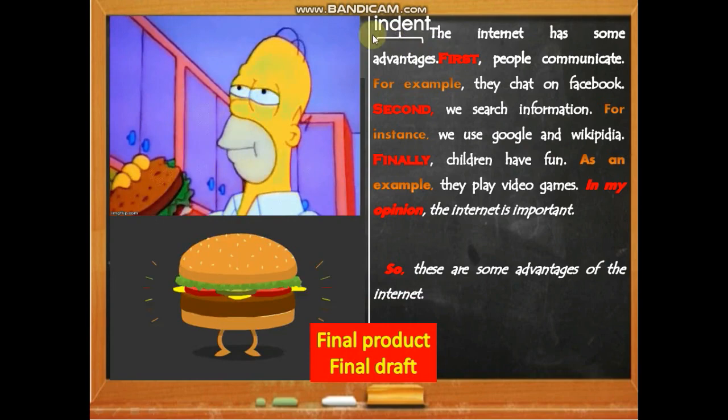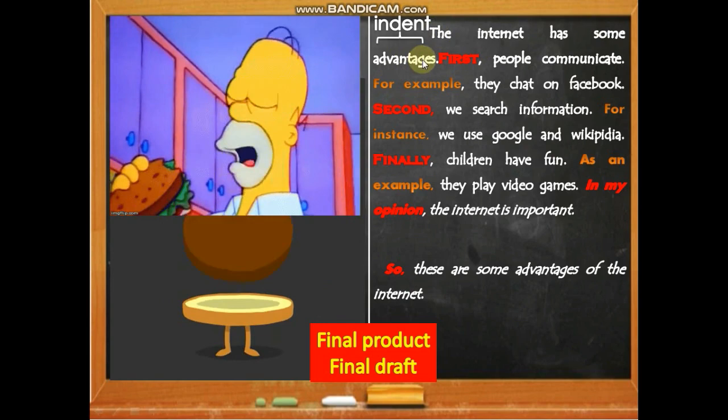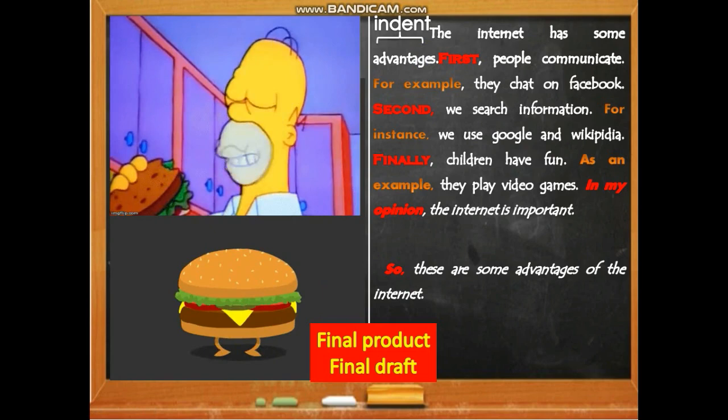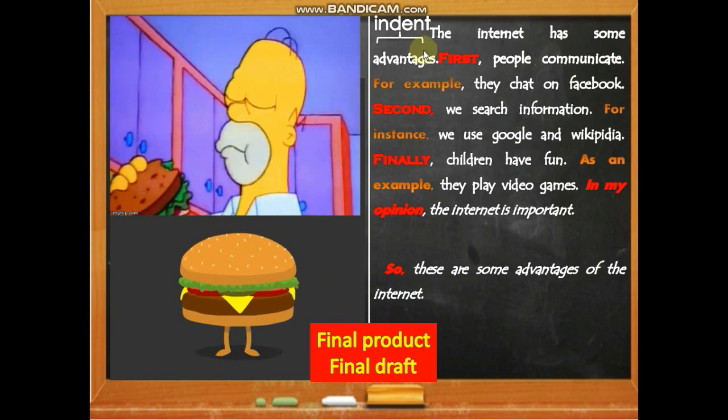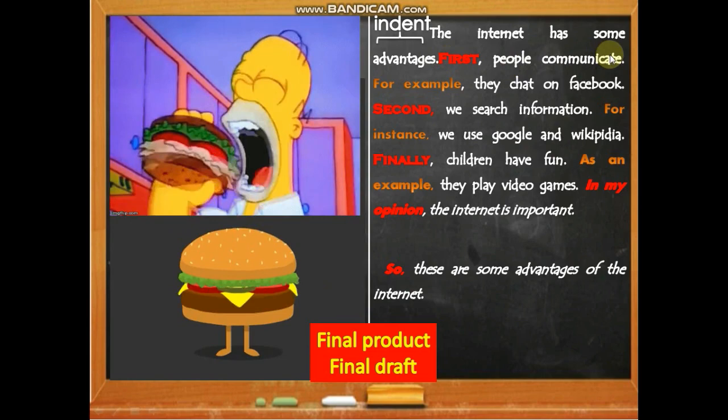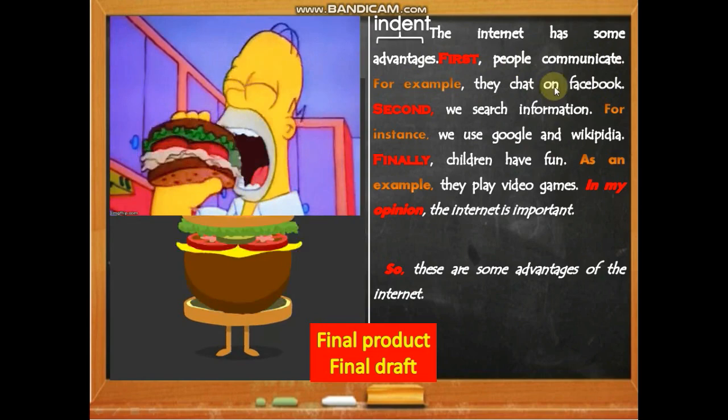The first sentence on the first line is: 'The internet has some advantages.' This sentence comes from the topic — the teacher said 'write a paragraph about the advantages of the internet,' and we turned that into a topic sentence: 'The internet has some advantages.' This is the general idea. Then: 'First, people communicate' — that's the first idea — 'for example, they chat on Facebook.'